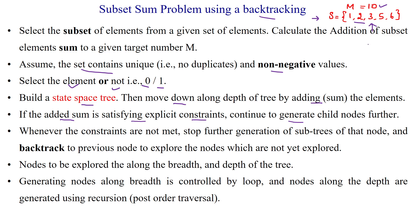For example, to reach 10 we start with 1. After selecting 1, the next node is 2, then the next node is 3. So it will not give you the solution 10. If it does not give you the solution, we have to ignore this path; otherwise you can go ahead. If you are satisfying the constraint, you can generate child nodes further; otherwise you stop the generation of child nodes through that subtree.